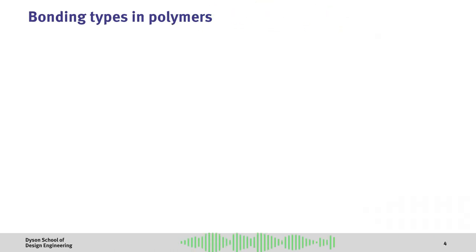Now, before we dive deeper into the different considerations in polymers, let's have a look at the different types of chemical bonding involved in polymers, which will inform our understanding of their behavior.